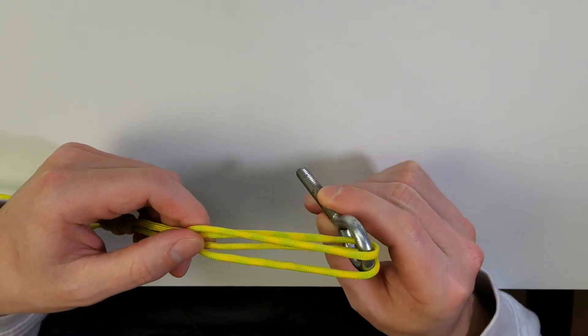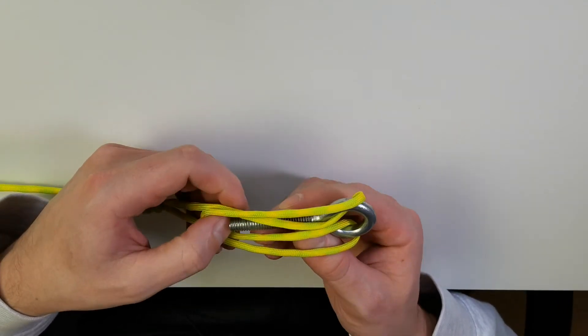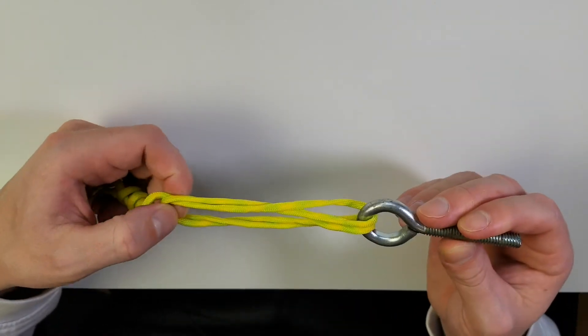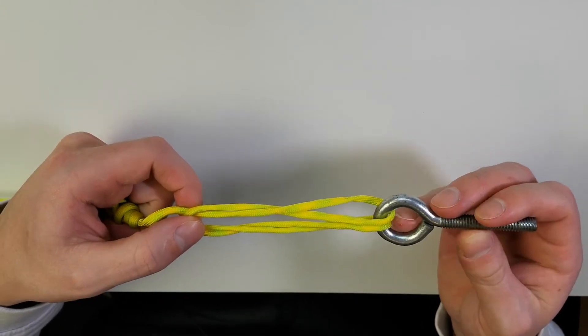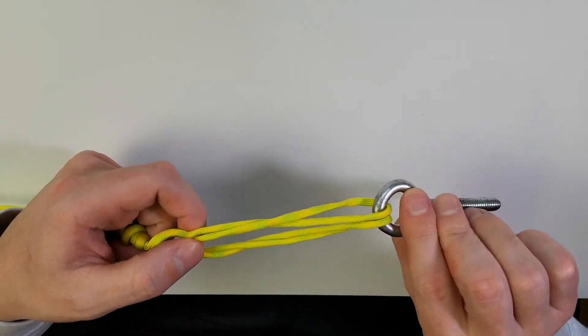All we have to do is take our swivel and loop it down, then bring it through this hole and pull it. We're going to do that six times.